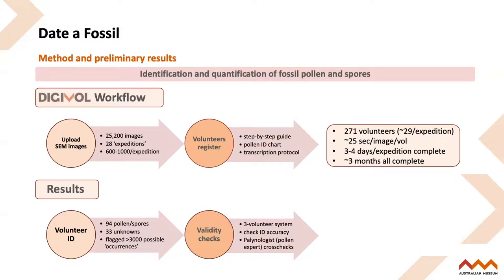The volunteers collectively identified 94 pollen and spores, 33 unknown microfossils, and they flagged over 3,000 possible occurrences of microfossil data. Validity checks were put in place to verify the IDs made by volunteers — a three-volunteer system was used, meaning a pollen specimen would be validated only if three volunteers agreed on its identification. Further validity checks involved research staff reviewing the flagged data, and eventually a palynologist cross-checked any IDs that were uncertain.